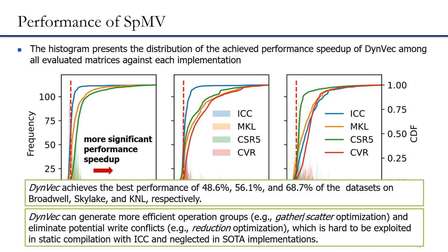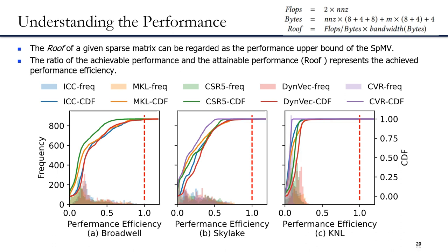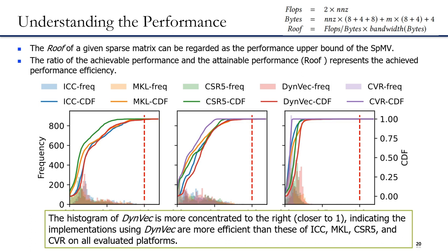To better understand the performance improvement, we derive the attainable performance bound of SPMV for each matrix in the dataset. Specifically, the attainable performance can be calculated as shown in the slide, where ANZ indicates the number of nonzero fields of a sparse matrix, NR indicates the number of rows, and the benefit is obtained from empirical benchmarks used in motivation experiments. Therefore, the roofline of a given sparse matrix can be regarded as the performance upper bound of SPMV. The ratio of achievable performance to attainable performance represents the achieved performance efficiency, and the histogram of DEMV is more concentrated to the right, indicating DEMV is more efficient than ICC, MKL, CSR5, and CVR on all evaluated platforms.